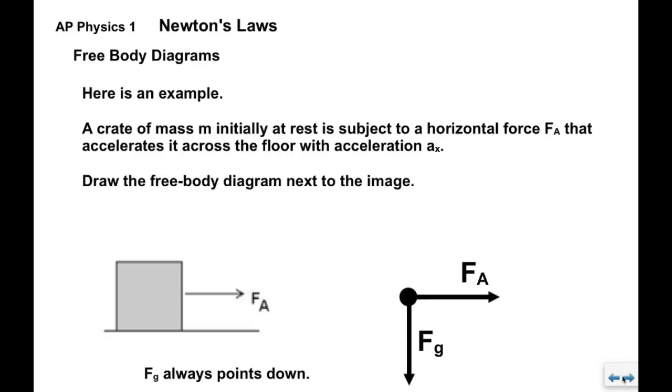We have an applied force F A pointing to the right. The object has mass. Therefore, it has a gravitational force F sub G. It's going to point straight down. It's on a horizontal surface, a floor. So, the floor provides an F N perpendicular and outward. So, there's F N straight up. And then because the object is moving to the right, we have a friction force that opposes the motion and points to the left. So, this is what our free body diagram looks like. We've taken this situation and modeled it as this one. All the interactions are replaced with forces.